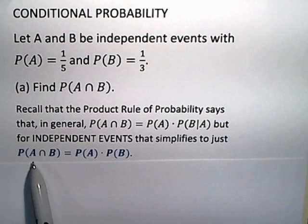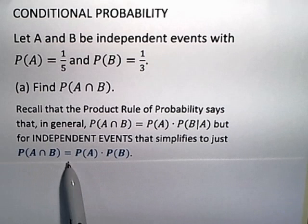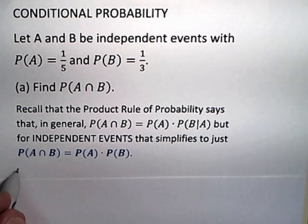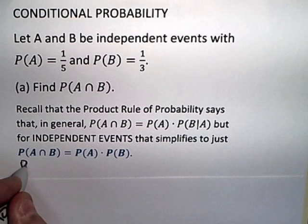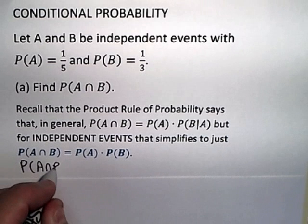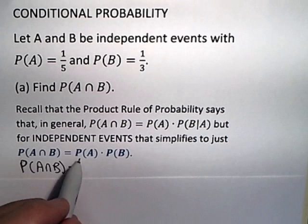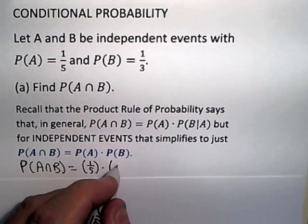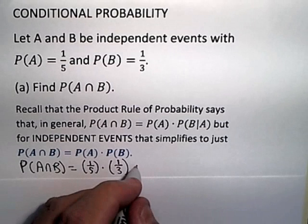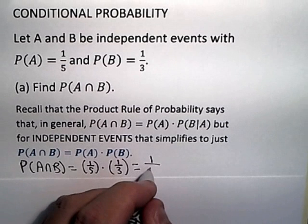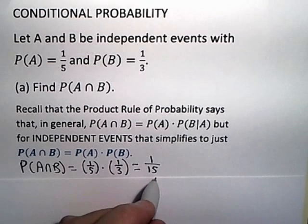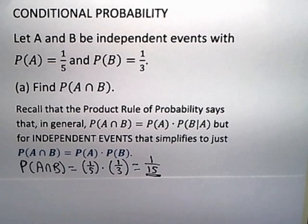So for independent events, the probability of A intersect B is the probability of A times the probability of B. To solve the problem, we simply make that product: the probability of A intersect B is one-fifth times one-third, which gives us one-fifteenth. So the probability of A intersect B is one-fifteenth.